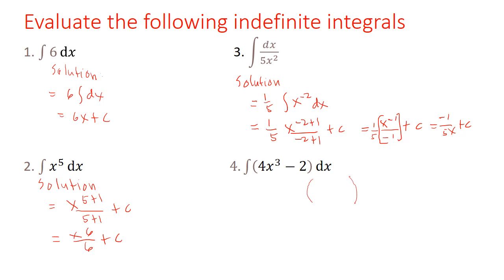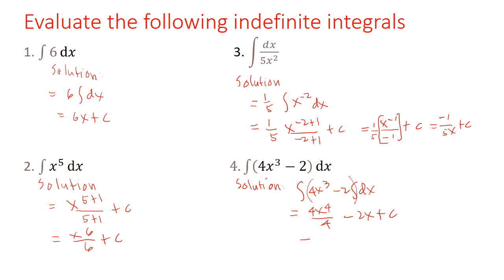Number four: this one can be written as integral of 4x cubed minus 2, integral of dx, equals 4x to the fourth over 4, minus 2x, plus C, equivalent to x to the fourth minus 2x plus C.